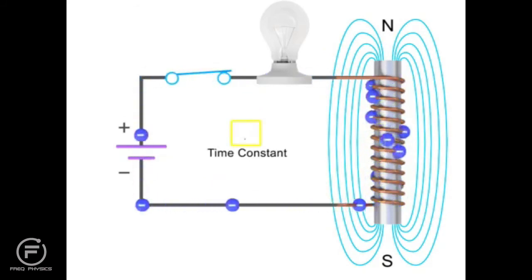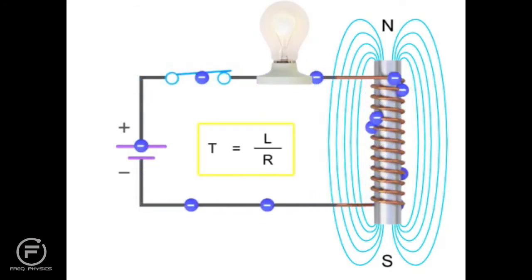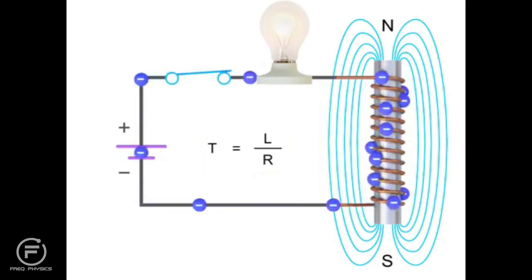The current will continue to flow and reach its maximum value after five time constants, or 5T, where T is equal to L divided by R. The light bulb will then be at its maximum brightness.